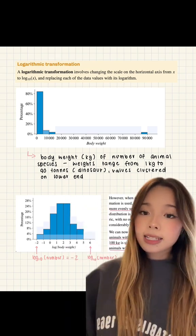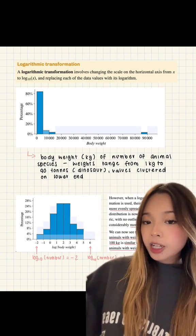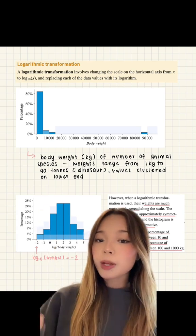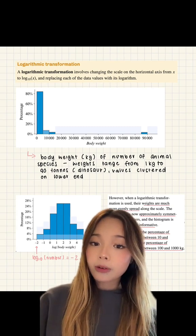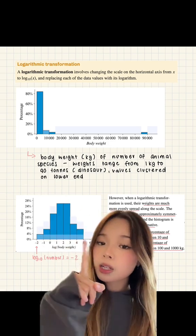So this graph here is an example of a logarithmic transformation as the x values have changed here based on the log formula. As we can see here, when a log transformation is used, the weights are much more spread evenly along the scale. This changes the distribution from positively skewed to approximately symmetric.